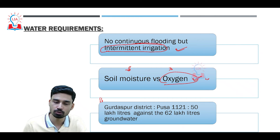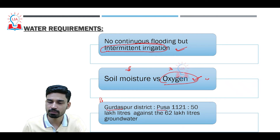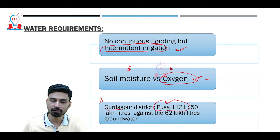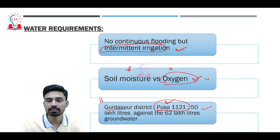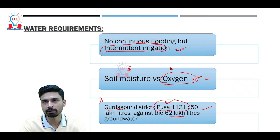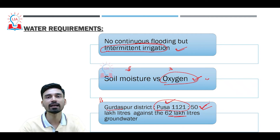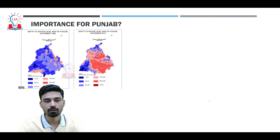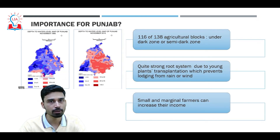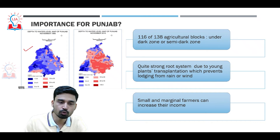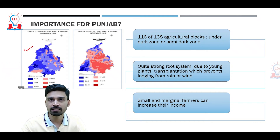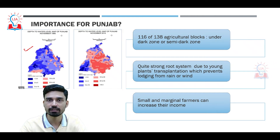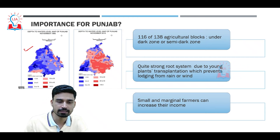An experiment in Gurdaspur district of Punjab with the Basmati variety Pusa 1121 found that instead of 62 lakh liters of groundwater used in conventional farming, the SRI system used only 50 lakh liters — a significant saving in water-stressed areas. Punjab is especially important here as it is the leading producer of rice in India and has suffered severe groundwater shortage due to continuous over-exploitation since the Green Revolution in the 1960s and 70s, driven by subsidized electricity.